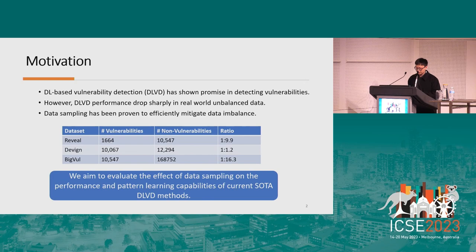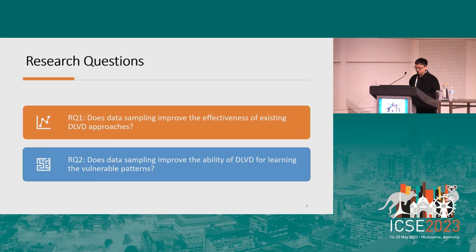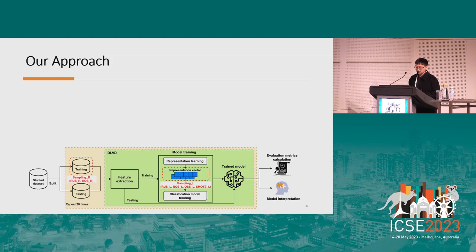Deep learning data sampling is effective in alleviating data imbalance for machine learning models, as demonstrated in various software engineering tasks. Therefore, in this work, we assess the impact of data sampling on the effectiveness of existing SOTA deep learning-based vulnerability detection (DLVD) approaches and their ability to learn vulnerable patterns. We design two research questions: does data sampling improve the effectiveness of existing DLVD approaches, and does data sampling improve their ability to learn vulnerable patterns? Our experiment pipeline involves three phases: feature extraction, model training, and model deployment. We select three graph-based models — Devign, Reveal, and IVDetect — and one token-based model, LineVul.